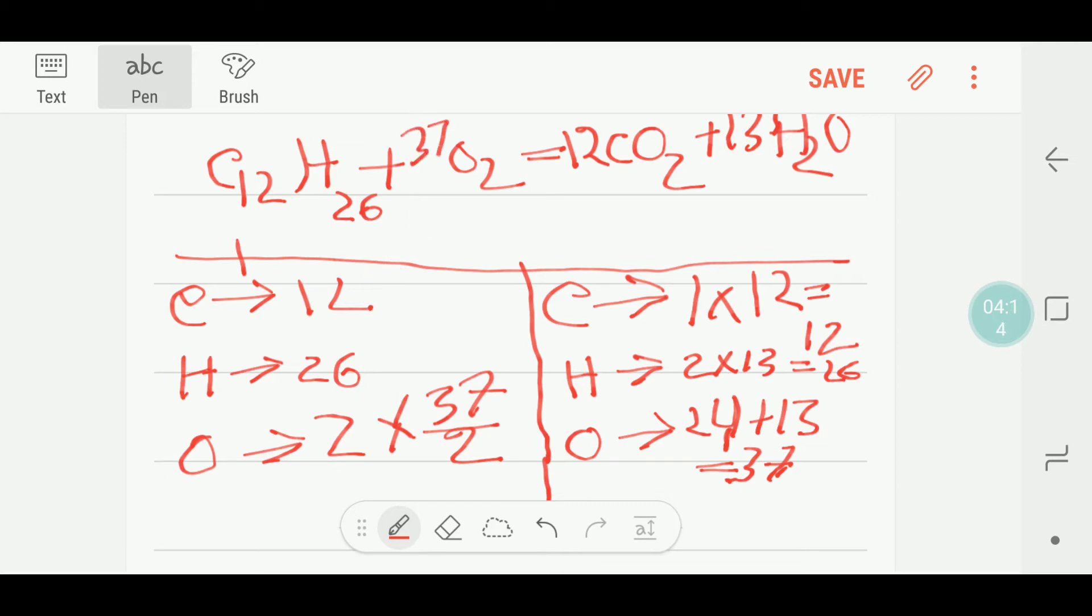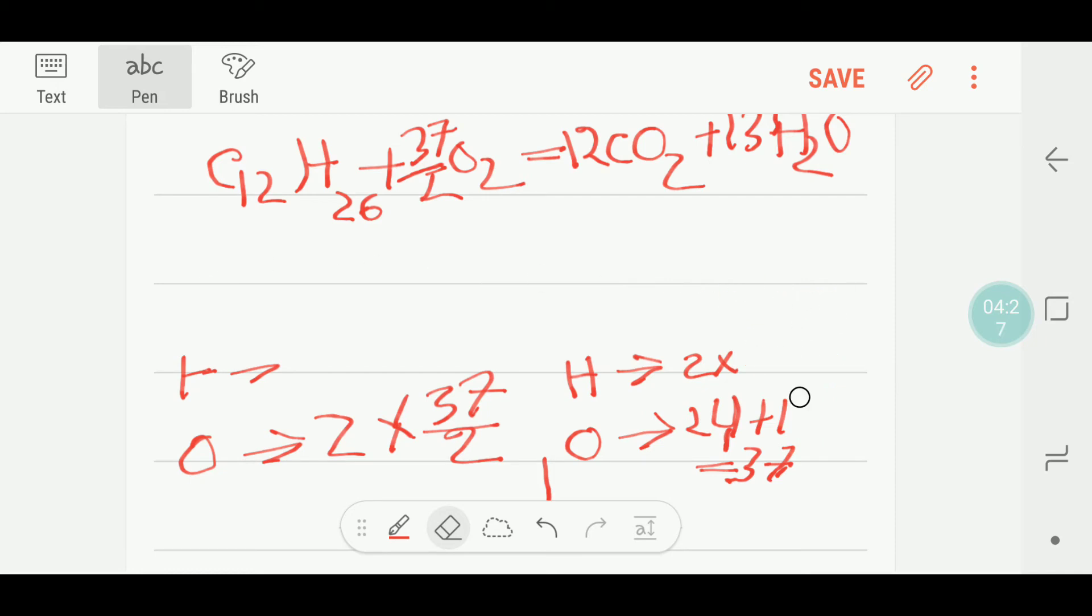So I have to write here 13 over 2. This is the balanced reaction, but we have to make this fraction a whole number. So to do so, we can multiply the whole equation by 2.